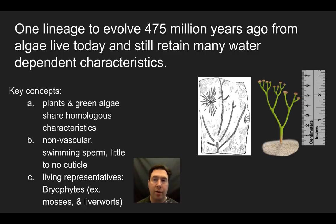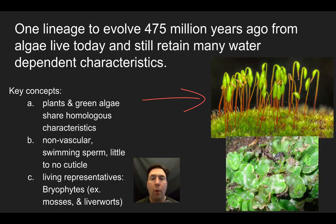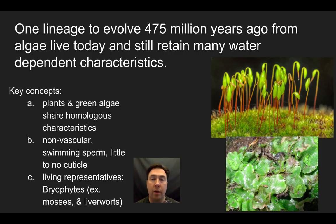Looking at fossils, we see structures like this early plant from around 450–475 million years ago. It's not very tall, not vascular, with no ability to conduct water and no detailed structures — no true leaves, just a simplified photosynthetic structure. Modern day examples include moss and liverworts — very small, low to the ground plants with very little ability to prevent water loss, no cuticle. They produce swimming sperm and have spore-producing structures called sporangia. They cannot conduct fluid within the cells.